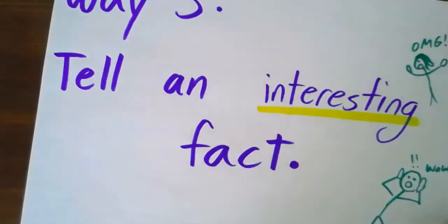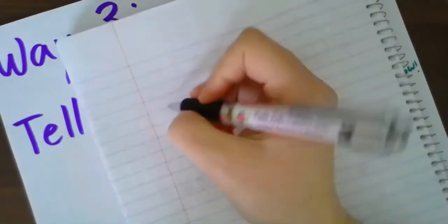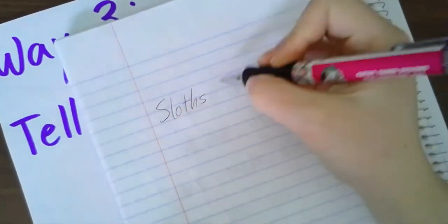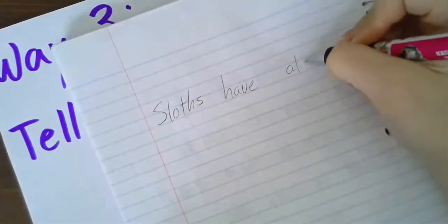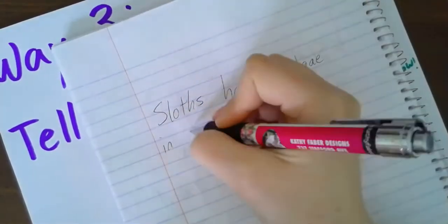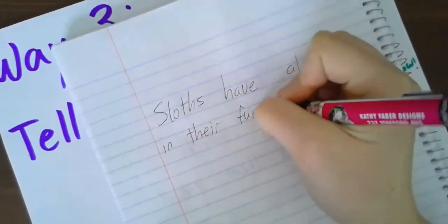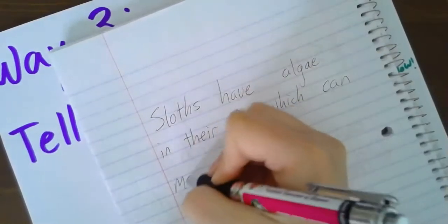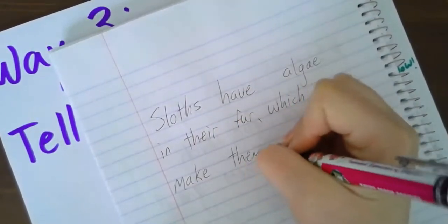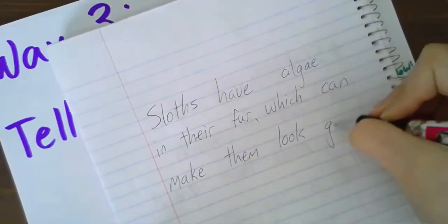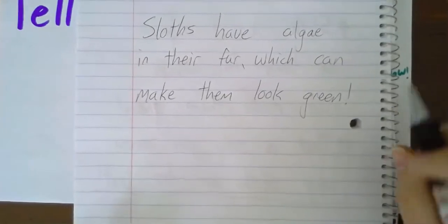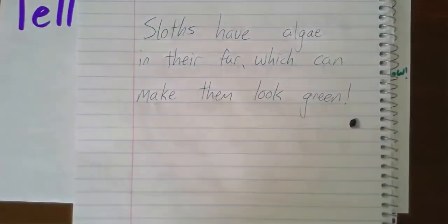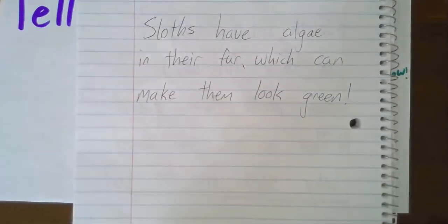So I'm going to try and write an interesting fact about my sloths. If you know this fact, you're like an animal expert, okay? Let's see. Sloths have algae in their fur, which can make them look green. Did you know that? So that is my really interesting fact.